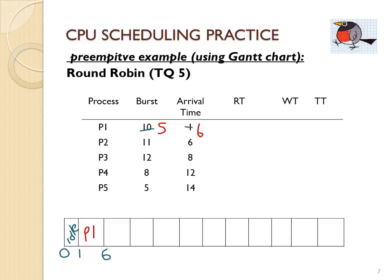At time 6, a new process P2 has arrived. Both P1 and P2 are in the ready queue — on a test or assignment, either could go at time 6. I chose to let P2 go, giving it five time units, leaving it 6 remaining, and a new arrival occurs at time 11. Then we go back to P1, since P1 arrived before P3, and P1 finishes all of its execution.